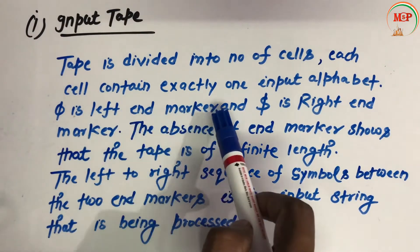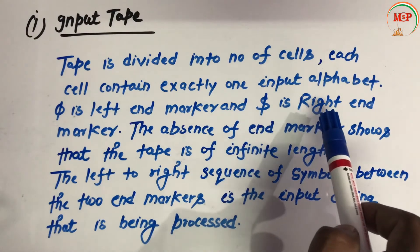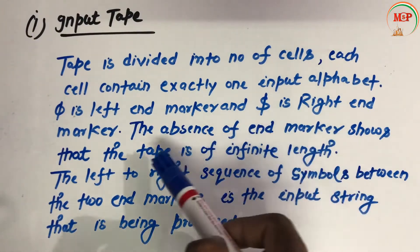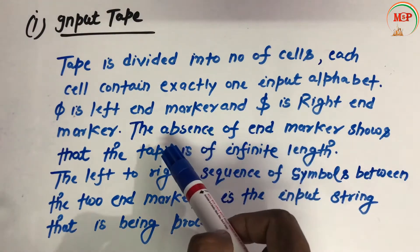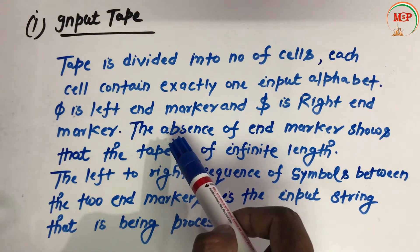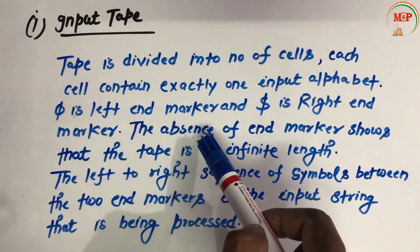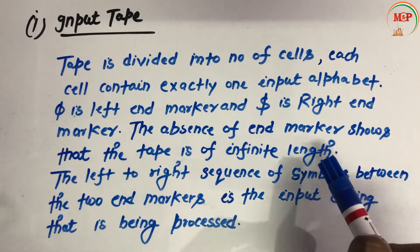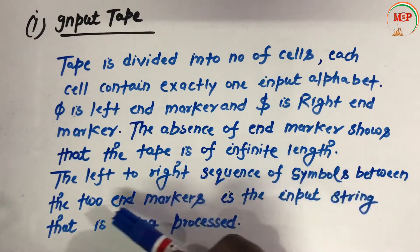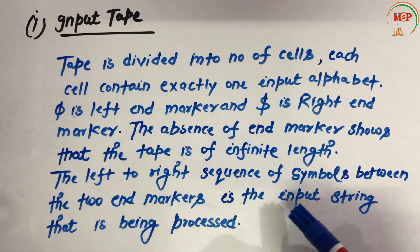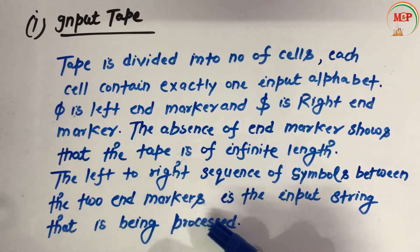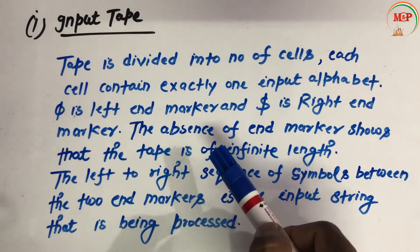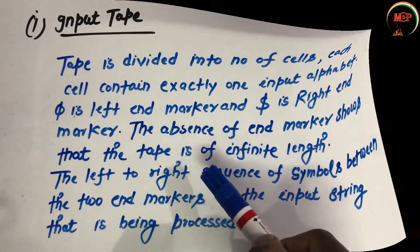The yen symbol is the left-hand marker and the dollar symbol is the right-hand marker. The absence of end markers shows that the tape is of infinite length. The left-to-right sequence of symbols from marker to end marker is the input string that is being processed.